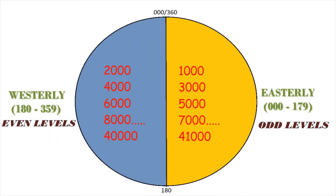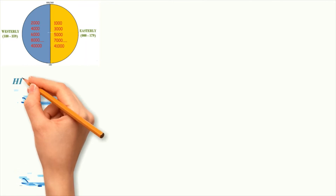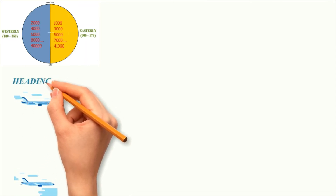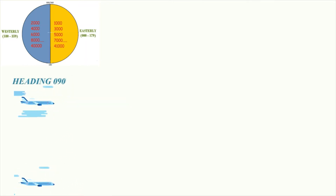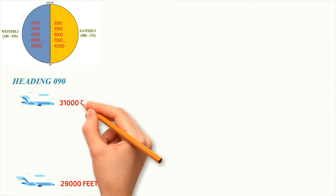Keep in mind that this rule is applicable only for aircraft flying at or below 41,000 feet. Let us try to understand this with an example. Consider two aircraft flying on an easterly heading, say 090 degrees. So they can fly only at odd levels — for example, 29,000 feet and 31,000 feet.